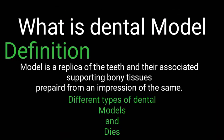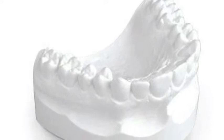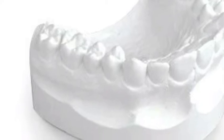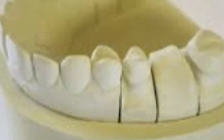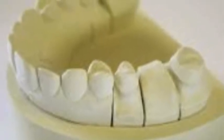A dental model is defined as a replica of the teeth and their associated supporting tissues prepared from an impression of the same. Here you can see a simple model made of plaster of Paris, and here is a model for crown and bridge work — in other words, that is called a die.